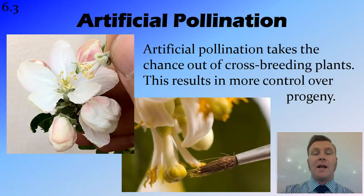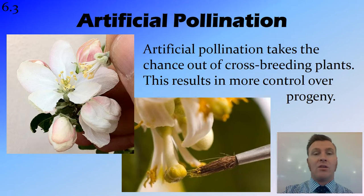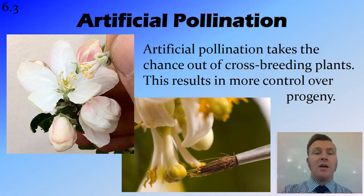We're now going to look at a couple of technologies — low-tech technologies, but still technologies — that help the selective breeding process. One of these is artificial pollination, a technology used on plants that results in humans having more control of the progeny, or offspring, of those particular plants.